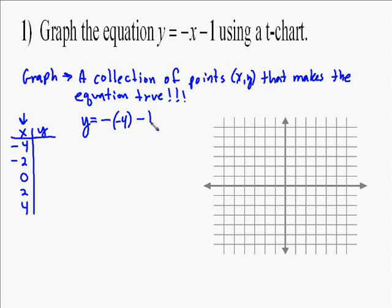Now you just plug in your x values and find your y. I'm going to plug negative 4 in for x, and I'm going to have y equals negative negative 4 minus 1. A negative negative 4 is 4, so you end up with 4 minus 1, which is 3.